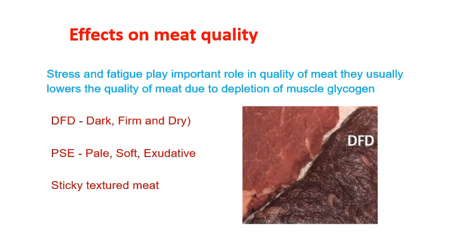The effect of transportation on meat quality is significant. Stress and fatigue play an important role in lowering meat quality through depletion of muscle glycogen. The most common resulting conditions are DFD — dark, firm, and dry meat — and PSE — pale, soft, exudative meat. Another condition is sticky textured meat. We will discuss more details about these three in the latter part.